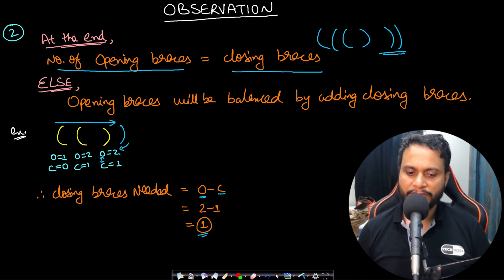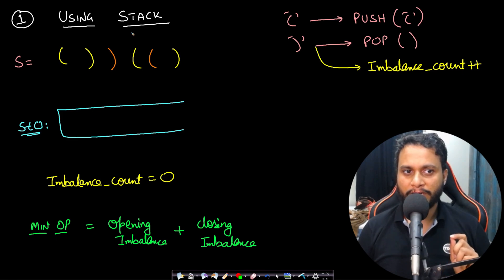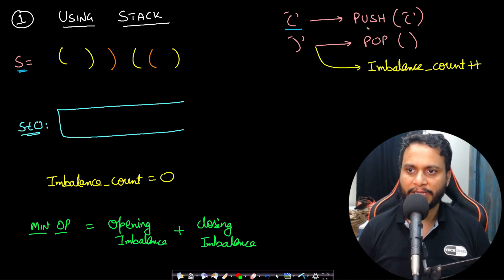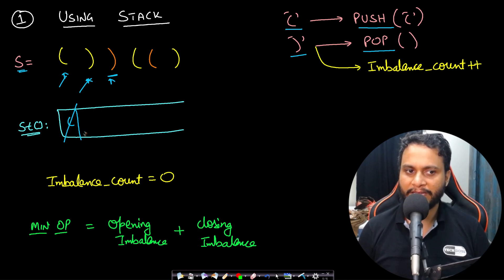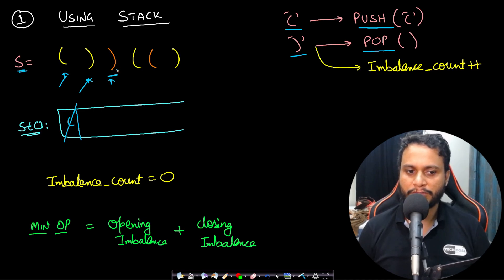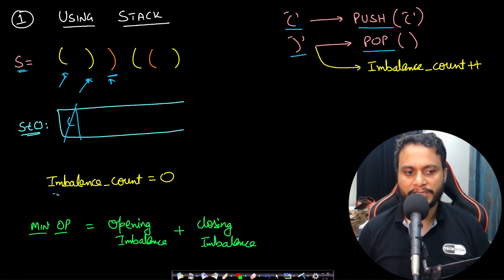Based on these two observations, let's look at the intuitive stack approach. Whenever we see an opening bracket we push it onto the stack, and whenever we see a closing bracket we pop from the stack. If we see a closing bracket and nothing is present in the stack — meaning no opening bracket to balance it — that creates an imbalance, so we increment an imbalance counter.